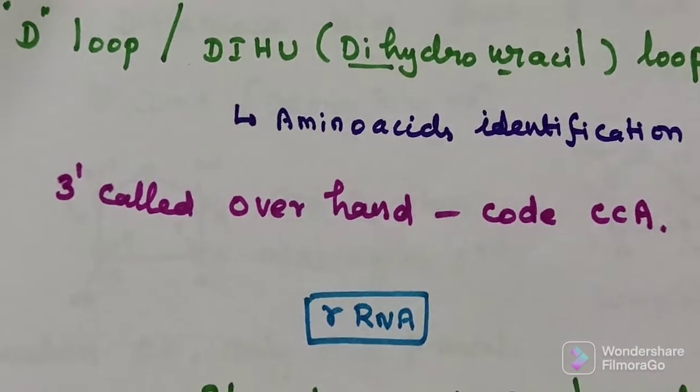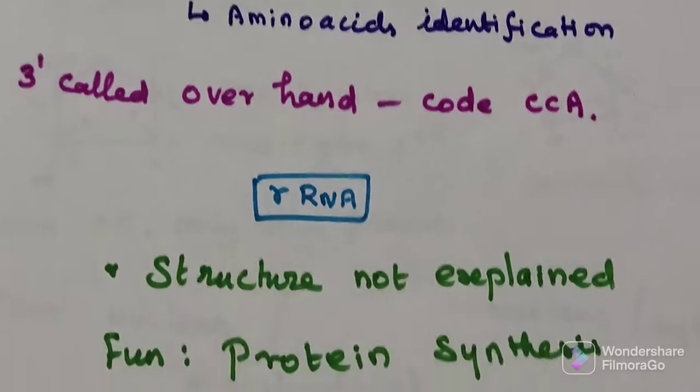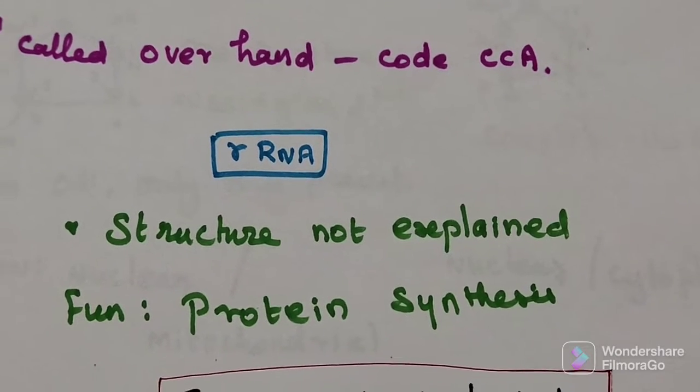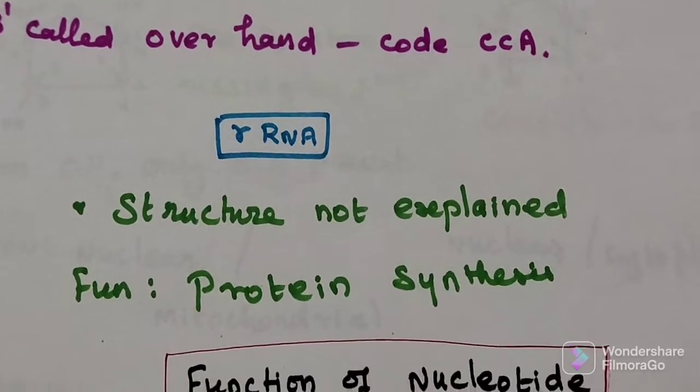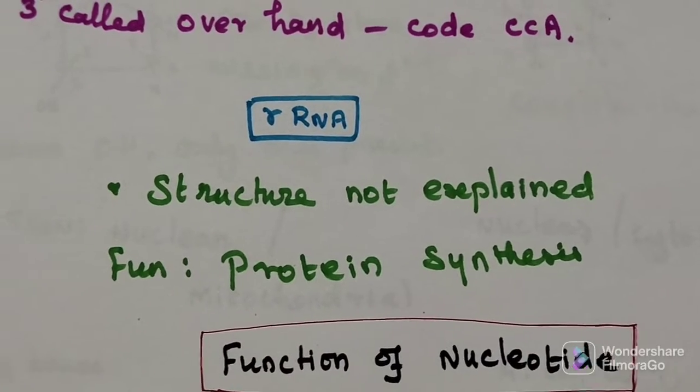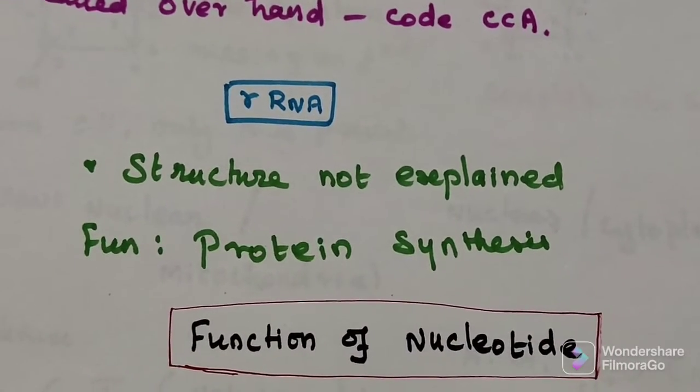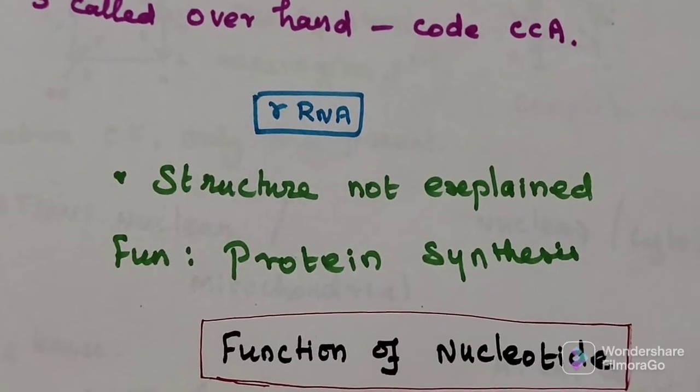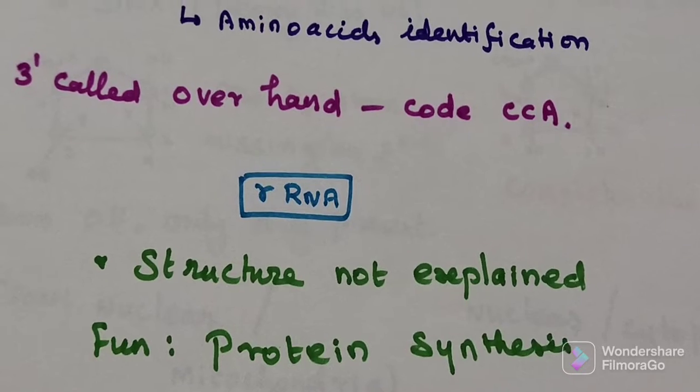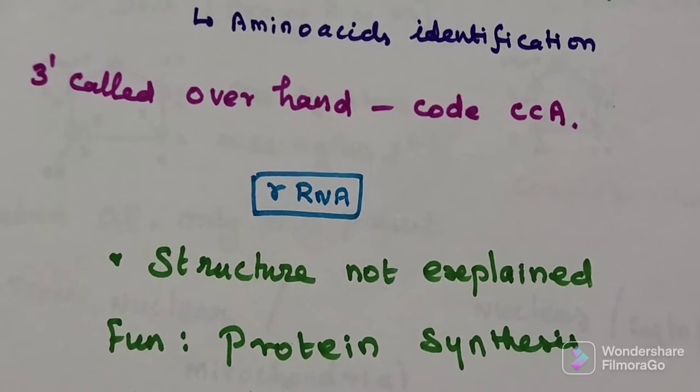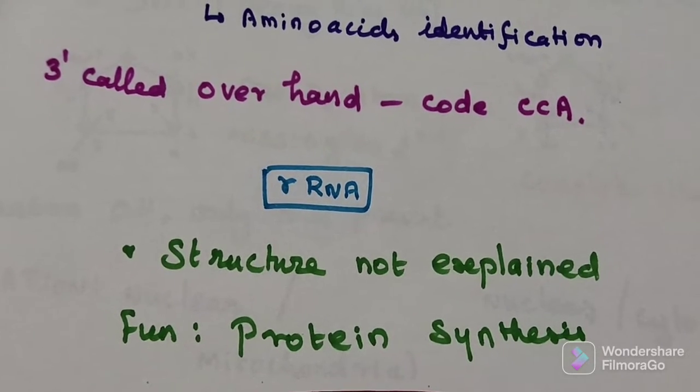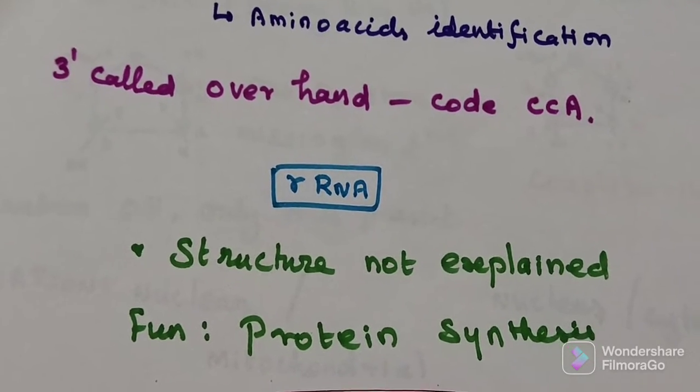Next is rRNA. The structure of rRNA has not been clearly explained. We just know it is made of protein plus rRNA in a coiling structure. The main function is protein synthesis. That is all about rRNA.